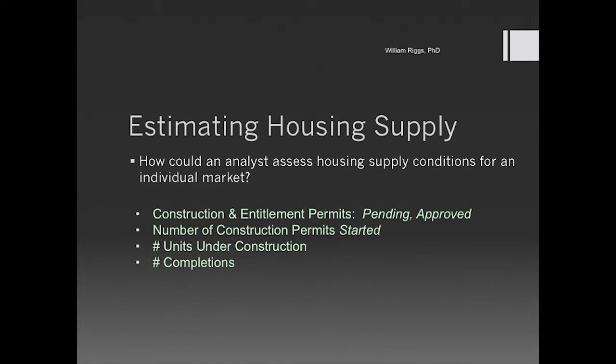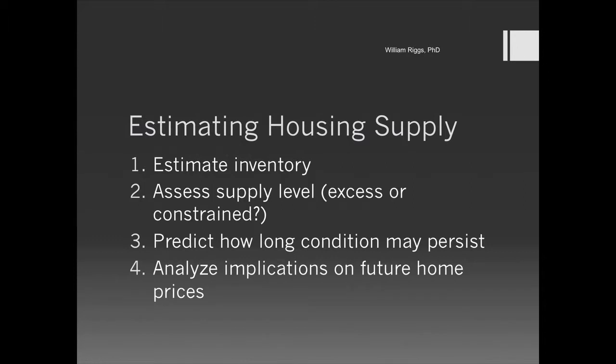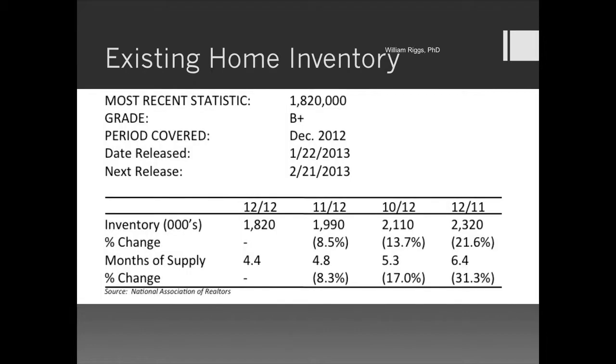How might you estimate housing supply and conditions? You could look at permits issued, units under construction, and what products are reaching the market — specifically, the number of completed units available for purchase. I have four easy steps: look at the inventory, decide whether it's excess or constrained, predict how long that condition might continue, and then estimate the implications for future home prices — is it a good time to invest, and do we anticipate more housing product coming to the city?